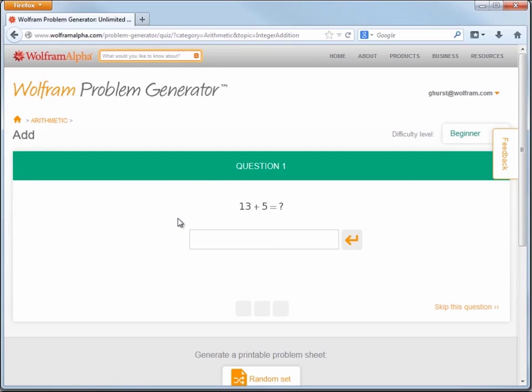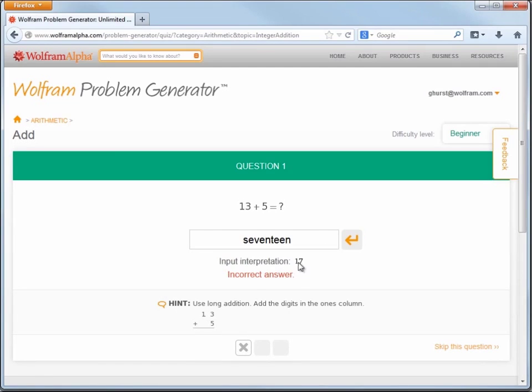So, let's say we think the answer is 17. The nice thing about the problem generator is it uses Wolframalpha's parsing capability so we can enter that in in English. 17. And it gave us an interpretation of the actual number 17. That's nice. Okay, well, unfortunately I got this one wrong. So when I get it wrong, a nice hint is provided. So it's telling me I should use long addition and to add the digits in the ones column. Okay, so now it provides me with the addition template here. So, now that things are lined up better, I can see where I made my mistake. I need to add 3 and 5 and that's 8. So the answer is 18.